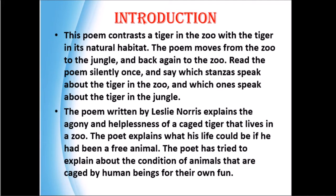Here the poet explains how a caged tiger — which is locked and confined — shows its helplessness while living in a zoo. He also explains how the tiger's life could be if it were free in a forest, how it could live. The poet is also trying to convey the conditions of animals which are locked, imprisoned, and caged by humans for their own entertainment. We humans are caging wild animals just for our fun, making them come far away from their natural habitats.